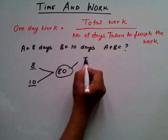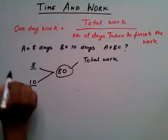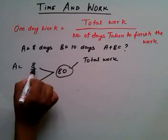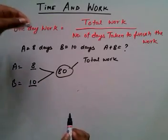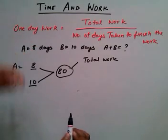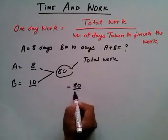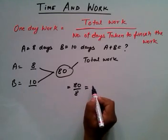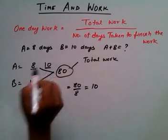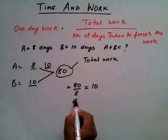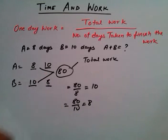We assume 80 as the total work. A completes the total work in 8 days and B completes the total work in 10 days. Using the formula, one day work of A equals 80 divided by 8, which is 10. So A's one day work is 10, and B's one day work is 80 divided by 10, which is 8.